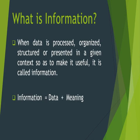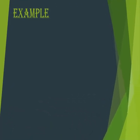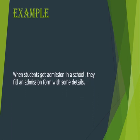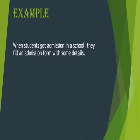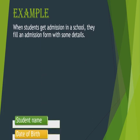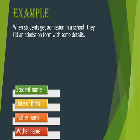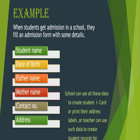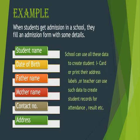Let's take an example. When students get admission in a school, they fill an admission form with some details — or their parents fill that form. The details can be student name, date of birth, father name, mother name, contact number, address, etc. The school can use all this data to create a student ID card, print address labels, or teachers can use such data to create attendance records or results. That is why the school needs this data.